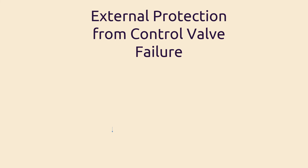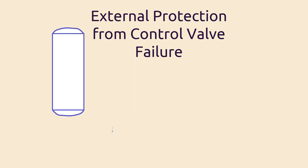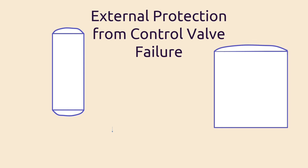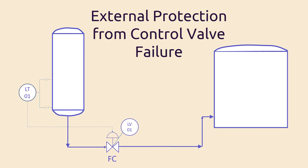So we have addressed the valve fail action, which shall reduce the risks if the air supply is cut. But what if the valve experiences mechanical failure? In this case, we would need another protection to protect our equipment. Suppose we have a vessel operating at 3 barg. The bottom liquid from the vessel is then transferred to a tank operating at atmospheric pressure. The pressure is dropped through a level control valve LV01.